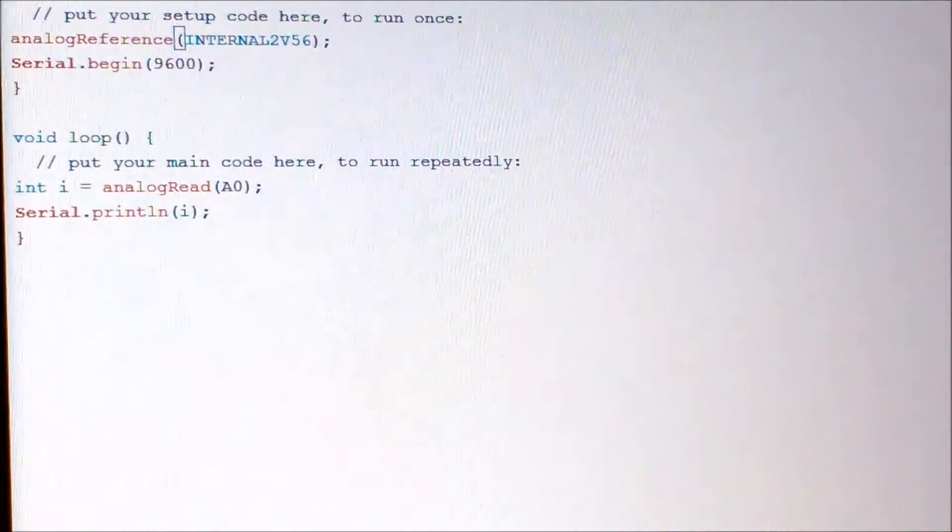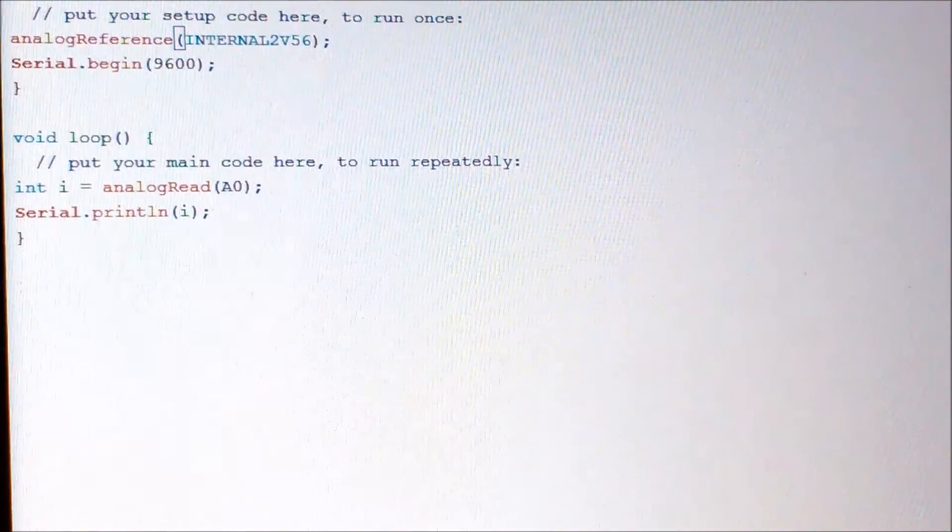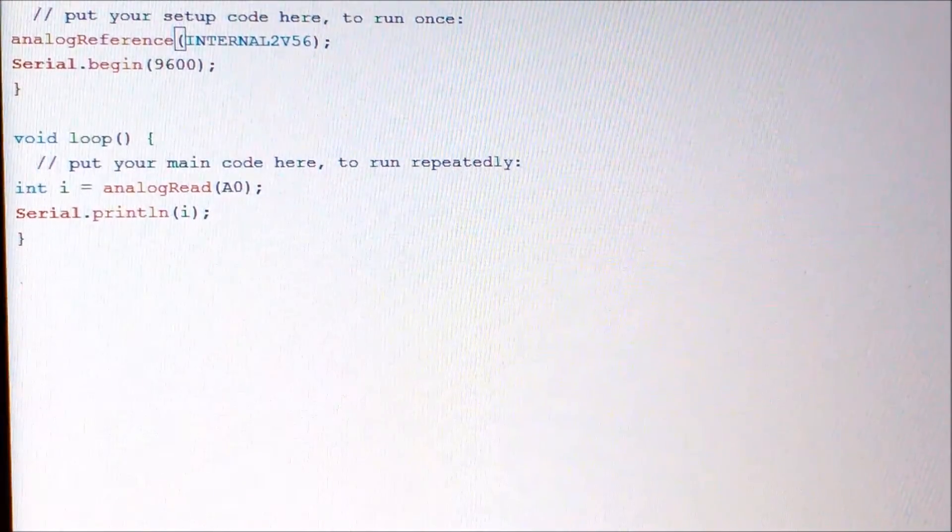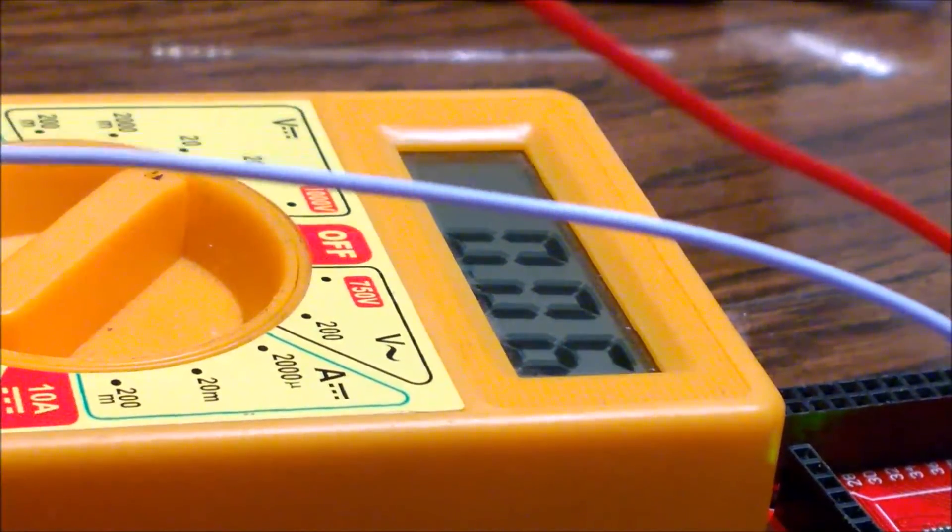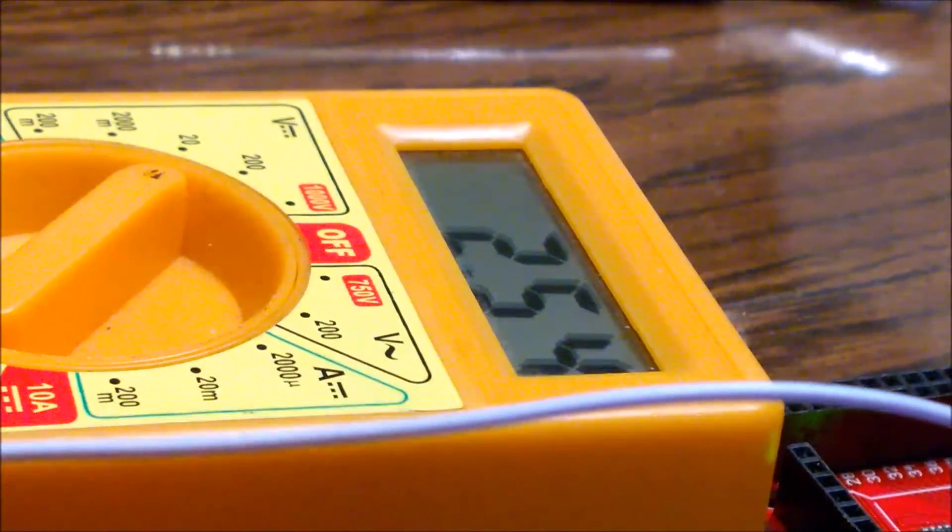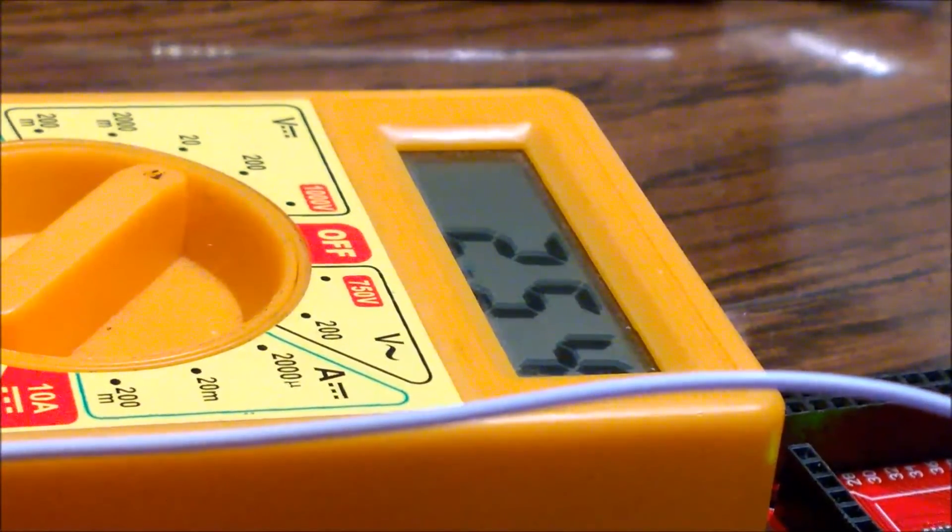So I'm uploading this code. Let's see how the reading on the multimeter changes. Here's my multimeter. So I connected my white pin to the ground, my red pin... we can see that the voltage has changed to 2.54 volt.